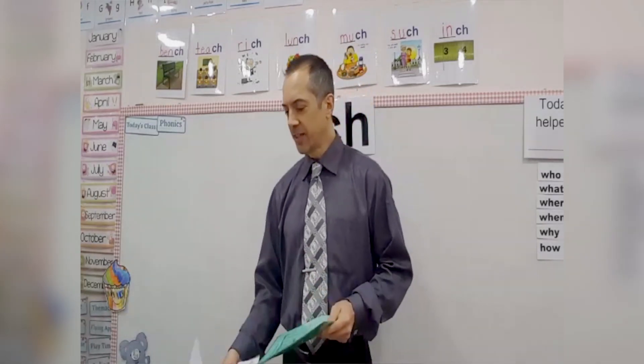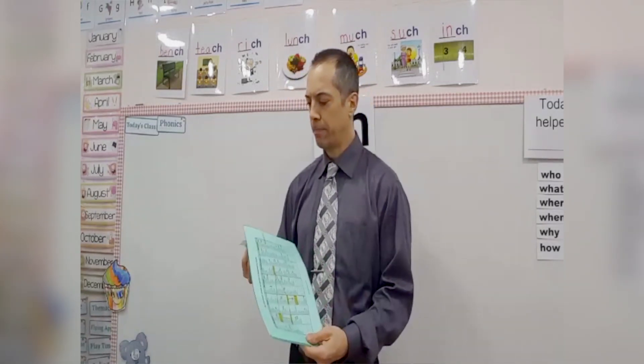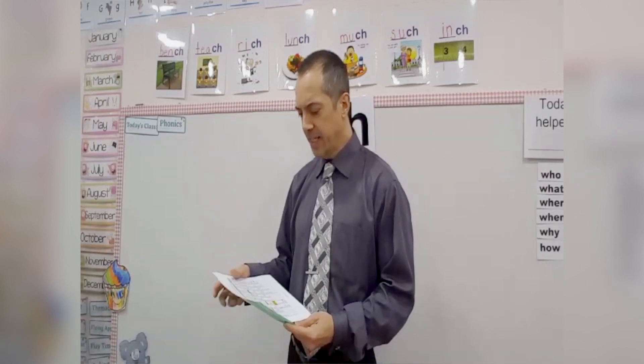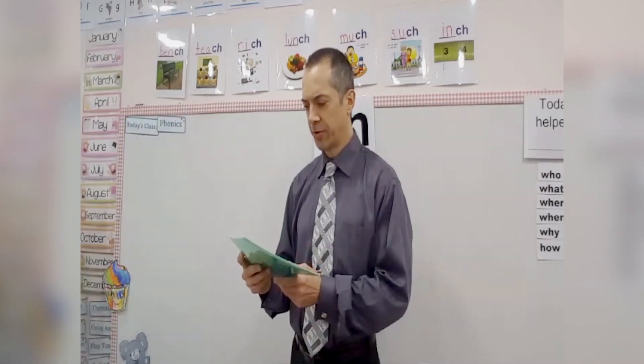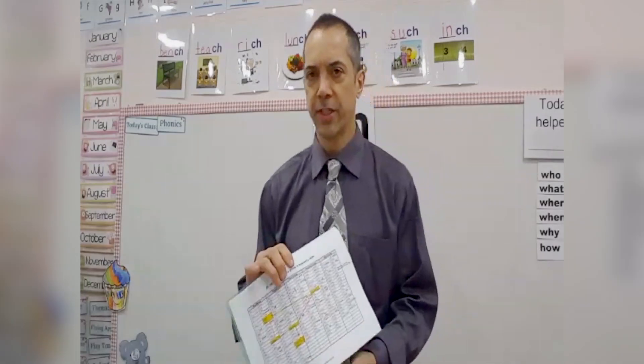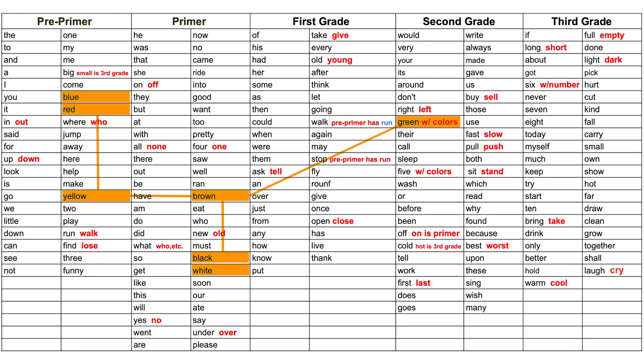Let's look at a couple of popular lists. In 1936, Edward Dolch put 220 words together — not counting 75 nouns listed separately — to help children read and write. You have adjectives of color that are not lumped together.